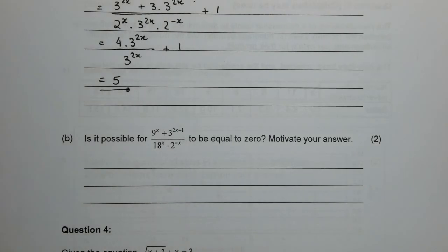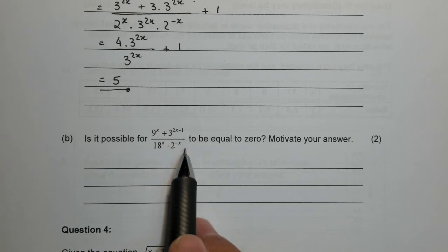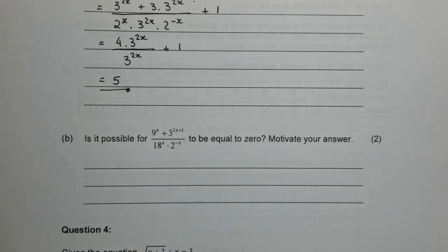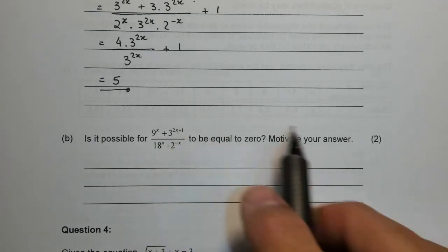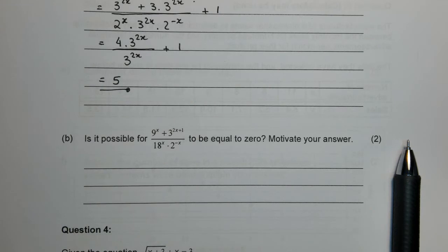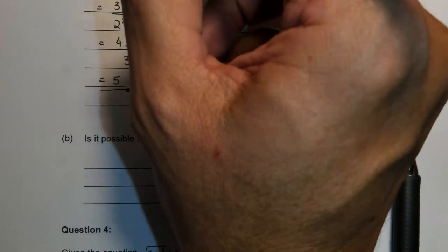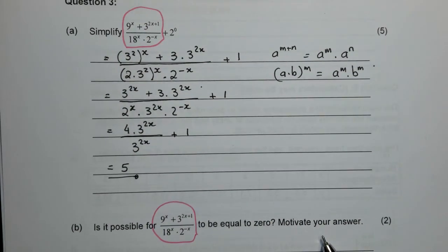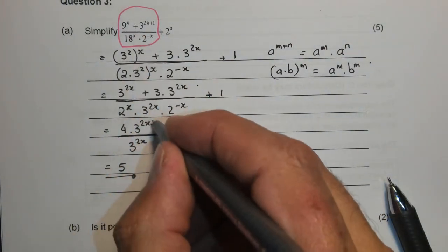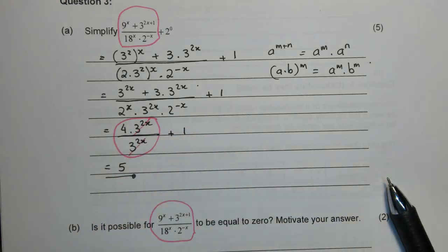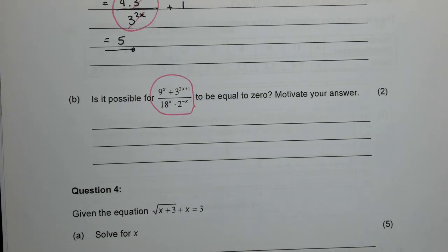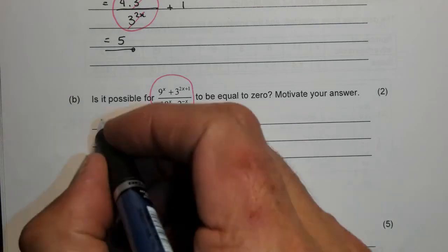The second part of the question was just for 2 marks. Is it possible for this thing to ever be 0? Now if you look at it it's a fraction. For a fraction to be 0 its numerator has to be 0. But in this case this whole component here was the component that we had at the top without the plus 1. And that component reduced to 4 after those 2 cancelled out.